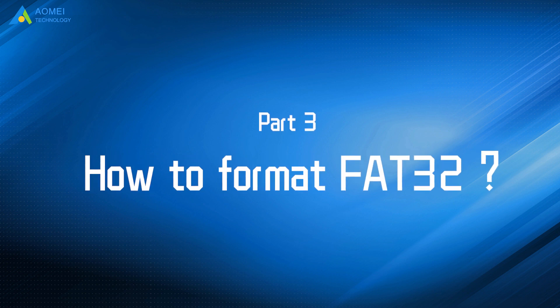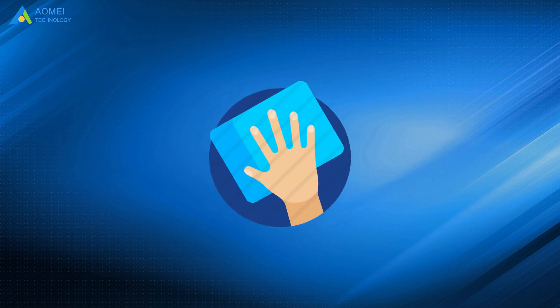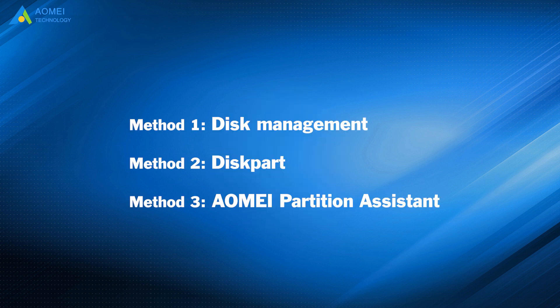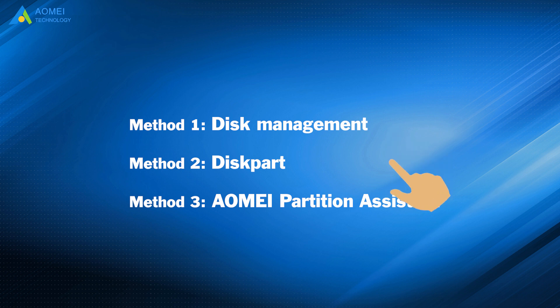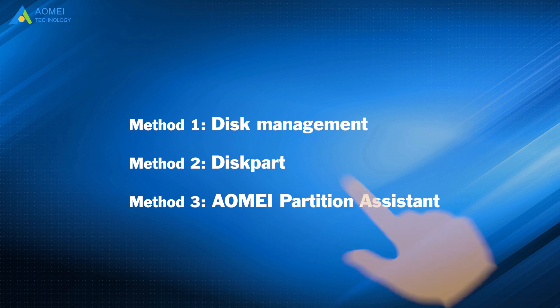Part 3: How to format FAT32? When it comes to how to format a USB drive to FAT32 in Windows, we have three methods. Method 1: Disk Management. Method 2: DiskPart. Method 3: AOMEI Partition Assistant.